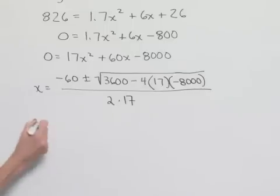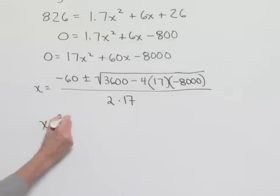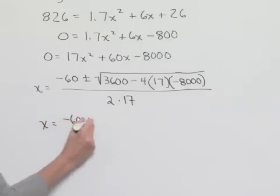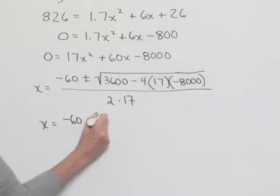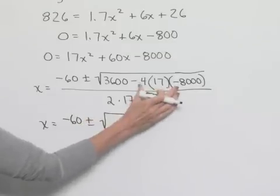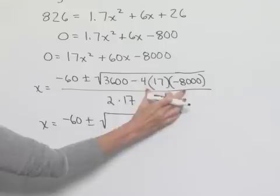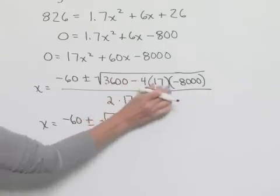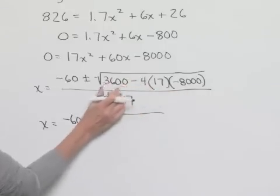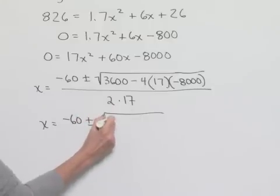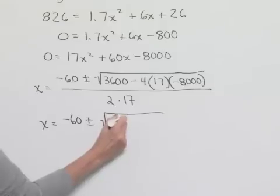Let's now simplify it a little bit. We're going to have x equals negative 60 plus or minus the square root of, and we can multiply 4 times 17 times negative 8,000 and then subtract that result from 3,600 to give us our value of 547,600.